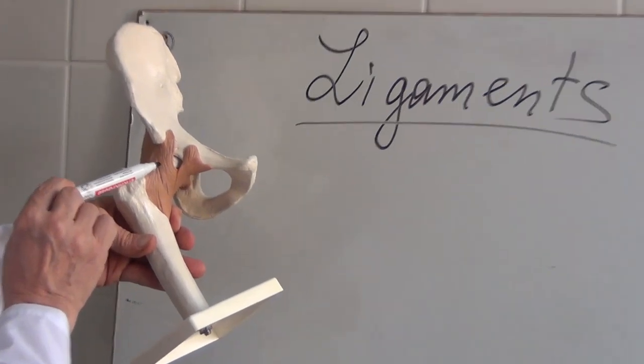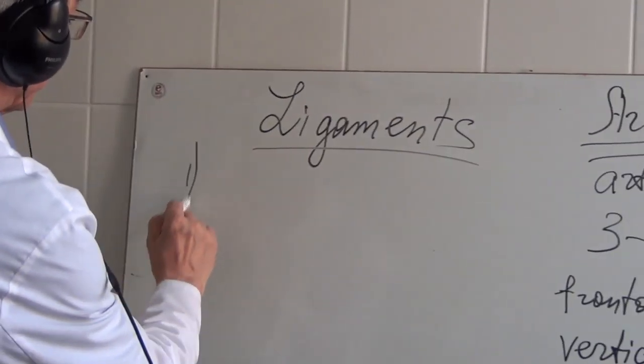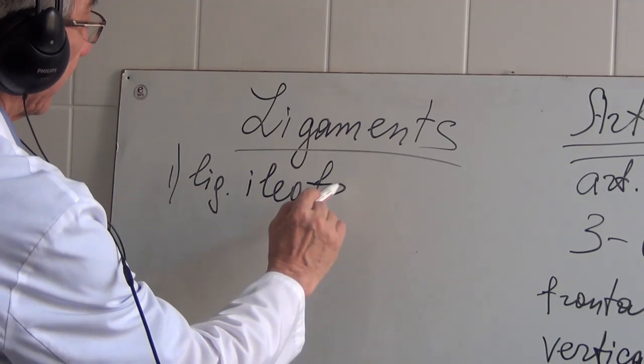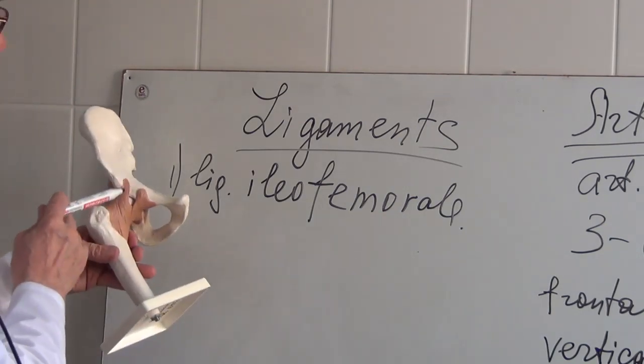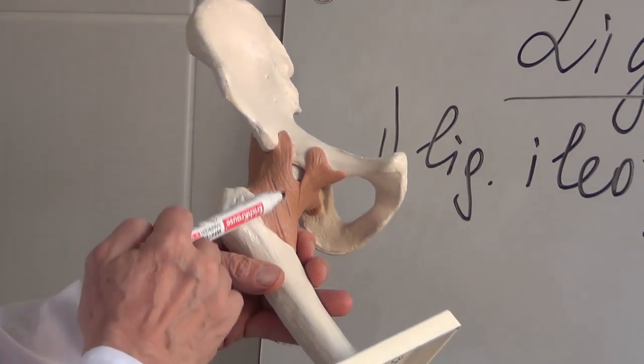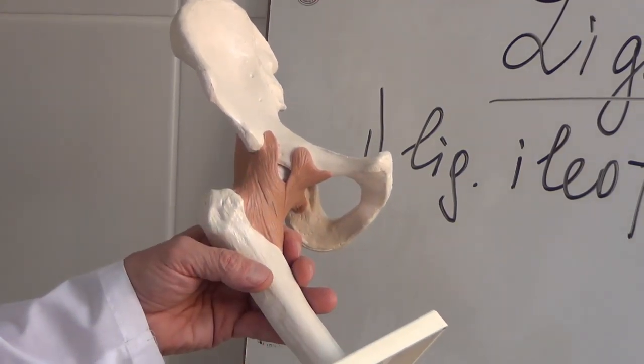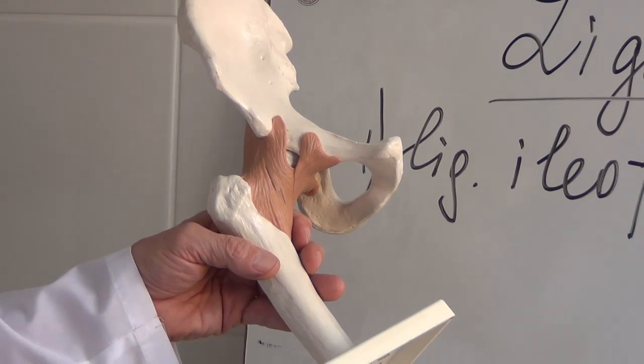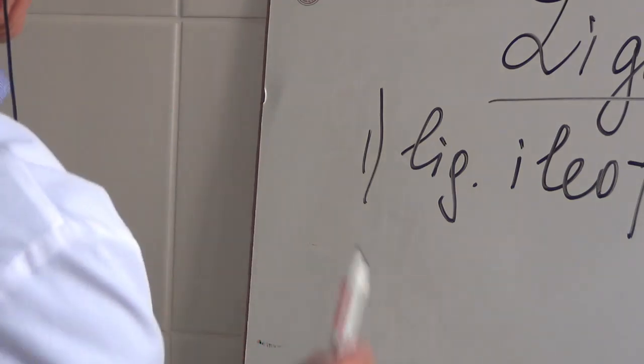Ligamentum iliofemorale. I shall write it down. Ligamentum iliofemorale. It's interesting that this ligament is most strength in our organism. It can hold about 300 kilos when we try to pull in different directions.